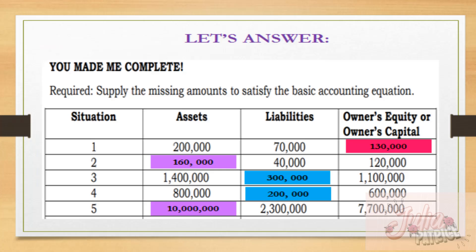Now let's answer the activity. Supply the missing amounts to satisfy the basic accounting equation. The basic accounting equation is assets equals liabilities plus owner's equity. For situation one, owner's equity is missing. Our formula is: owner's equity equals assets minus liabilities. So 200,000 minus 70,000; the answer is 130,000. Next, what's missing in situation number two is assets. Applying the accounting equation: assets equals liabilities plus owner's equity — 40,000 plus 120,000 — we arrive at 160,000 pesos.